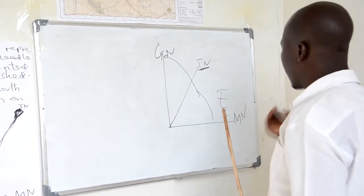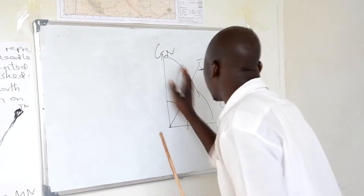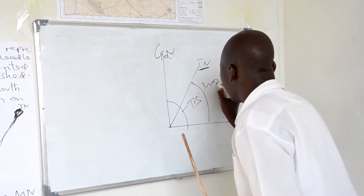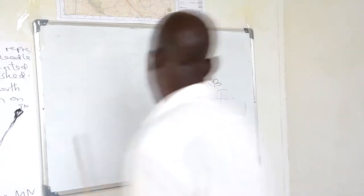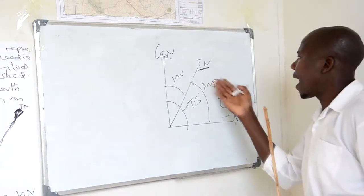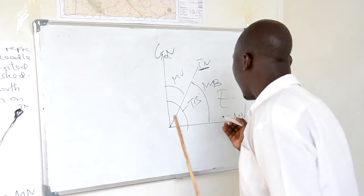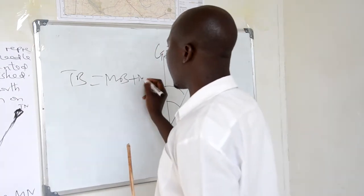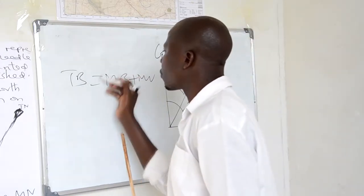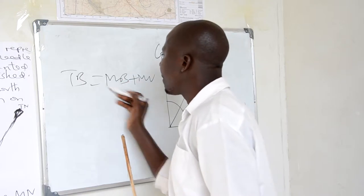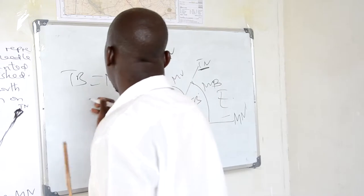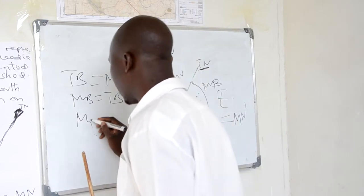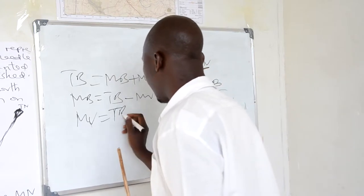Because magnetic north is in the eastern parts of true north, the formula will change. Therefore, true bearing is equal to magnetic bearing plus magnetic variation. In order to obtain magnetic bearing, you make it the subject: magnetic bearing equals true bearing minus magnetic variation. In order to obtain magnetic variation: magnetic variation equals true bearing minus magnetic bearing.